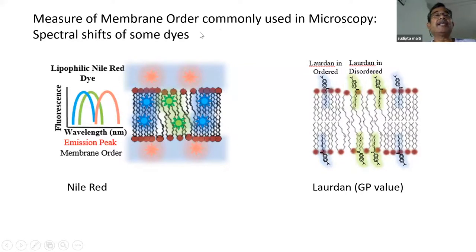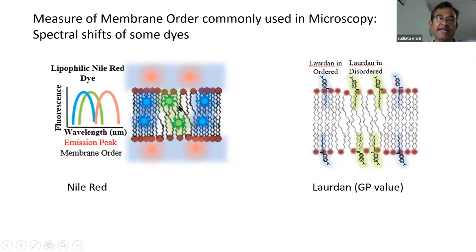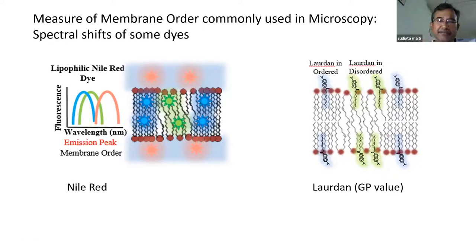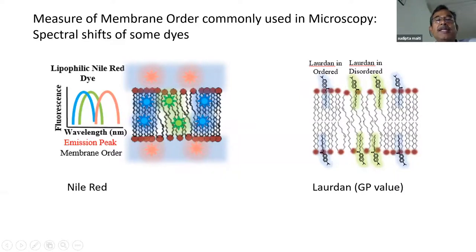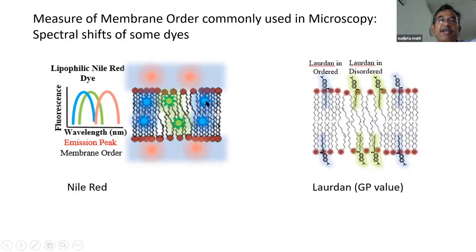There are dye molecules you can put in and measure membrane order by spectral shift. Some dyes are lipophilic — they go and sit inside the membrane. When they find an environment that is mostly ordered, there's very little water ingress, and they sense that low polarity and give one kind of emission spectrum. The same molecule in a disordered region, where water ingress is a little more and a water molecule occasionally comes in, will have a more polar environment and give a different spectrum.